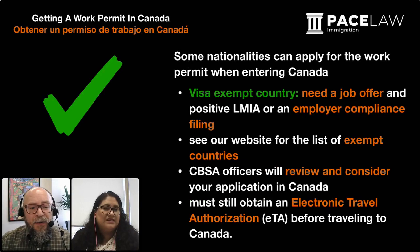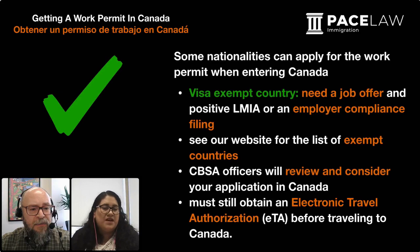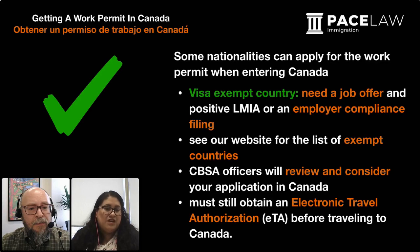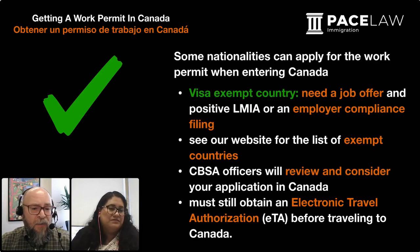There are some nationalities who can apply right at the border as they're coming in. There are some countries that are visa-exempt and can travel to Canada and apply for a work permit right at the border. Some of those nationalities are people from Spain, Mexico, Chile, and the USA. They also need the job offer and the positive LMIA, and they come with that complete package. The CBSA officer will then provide the work permit. Before traveling to Canada, they need to apply for the ETA — though Americans are not required to apply for an ETA before coming to Canada.